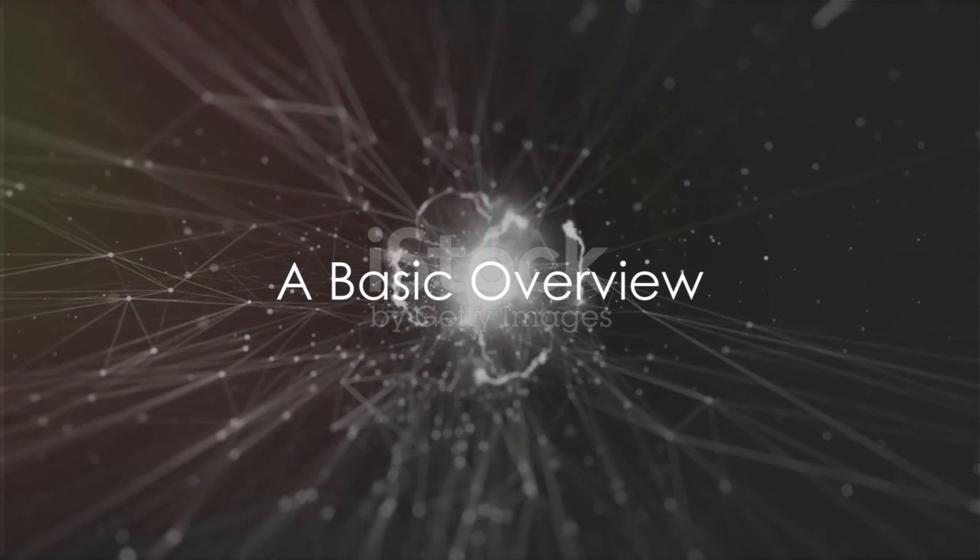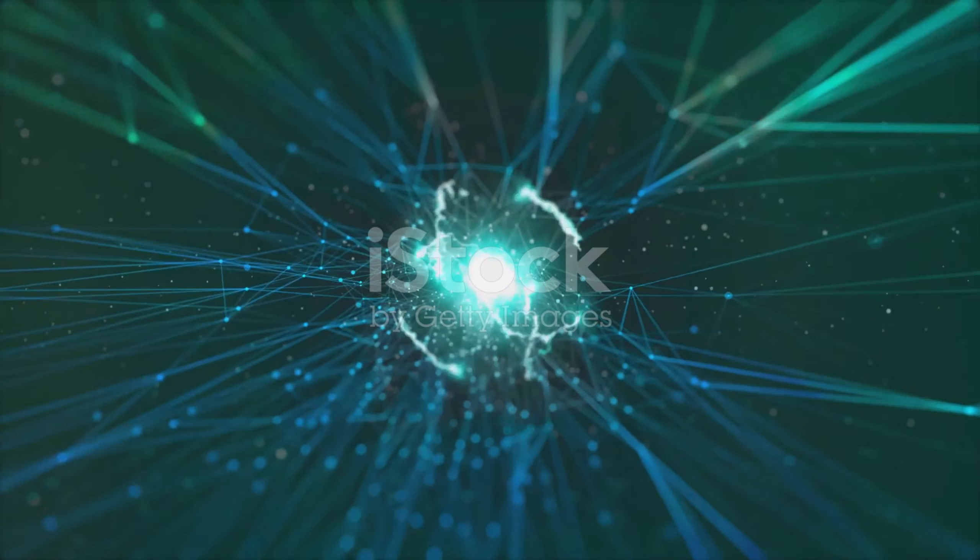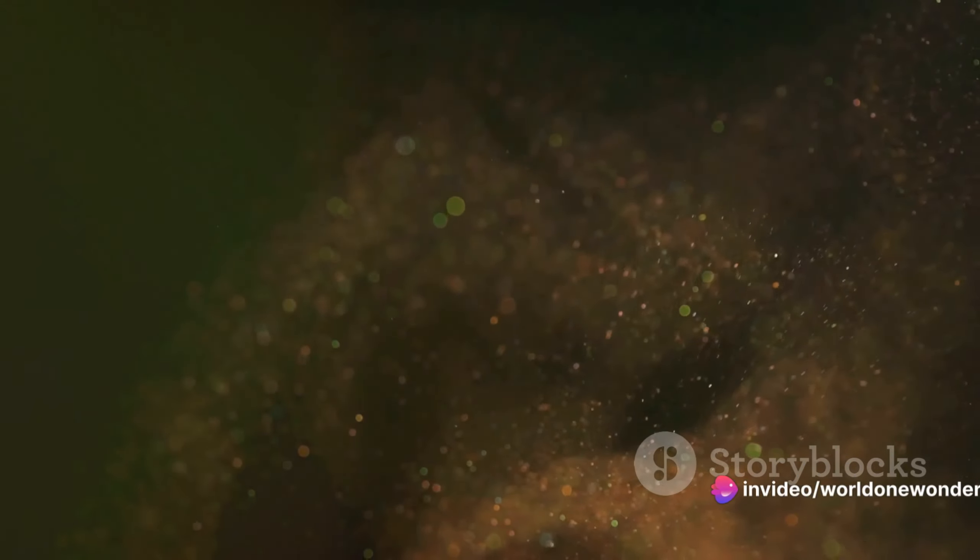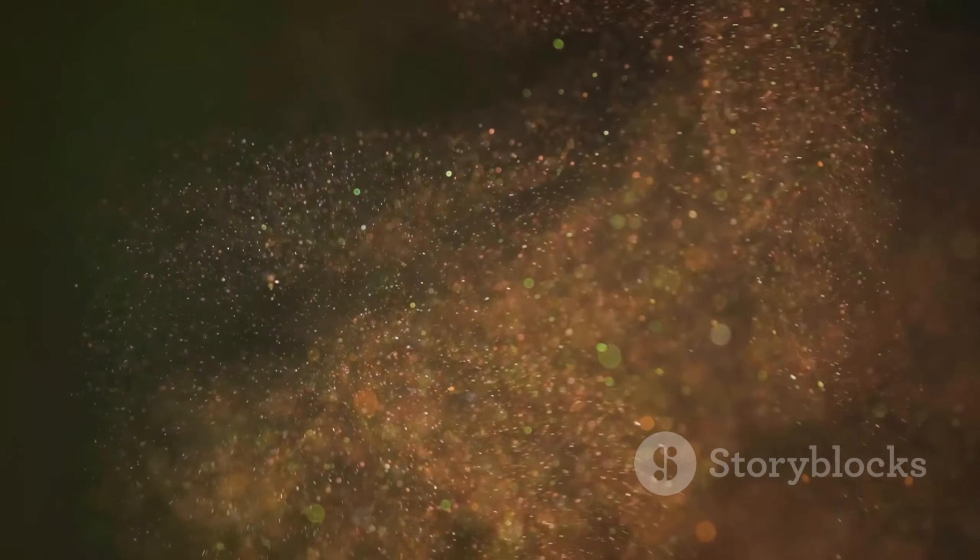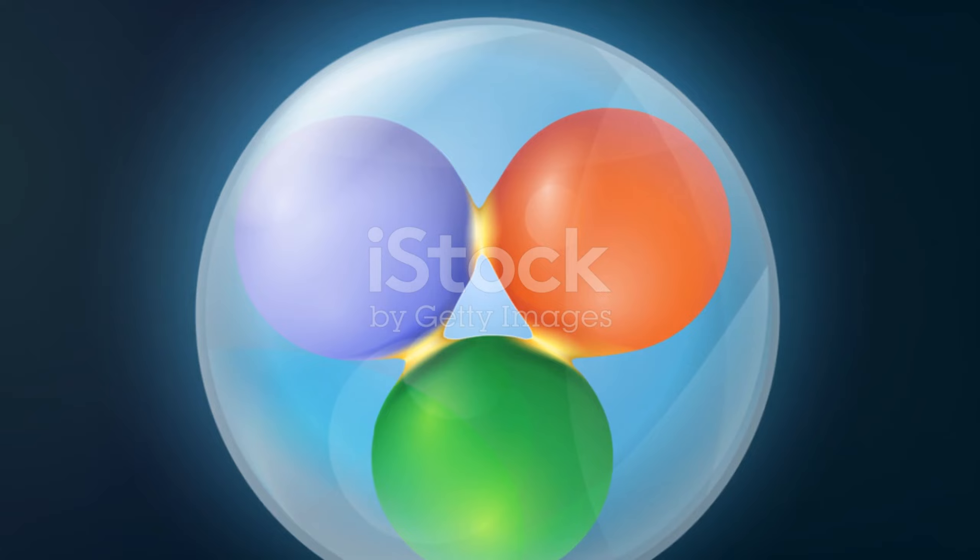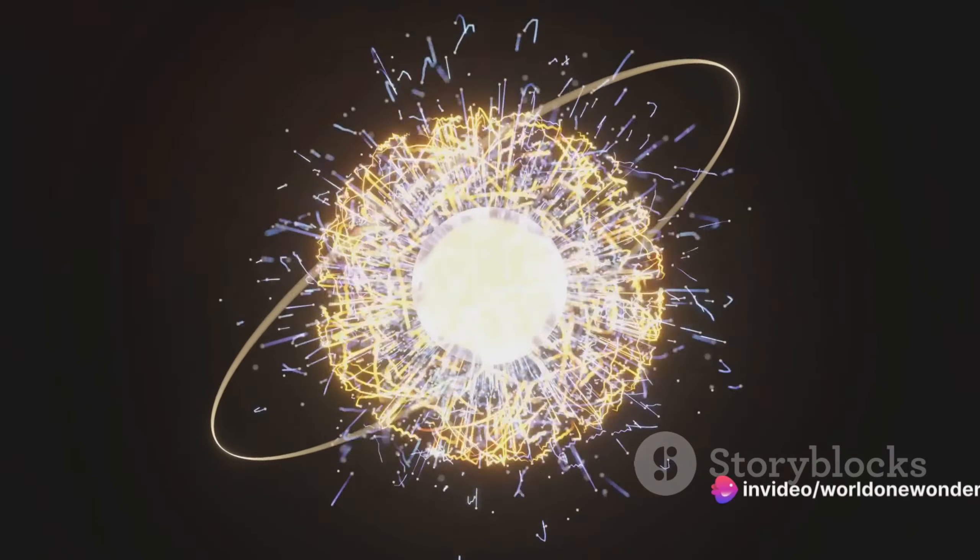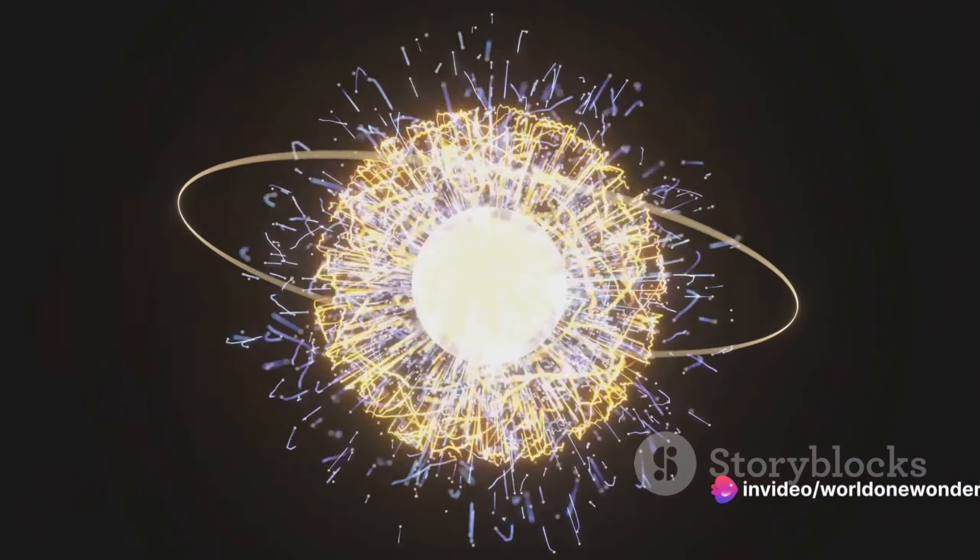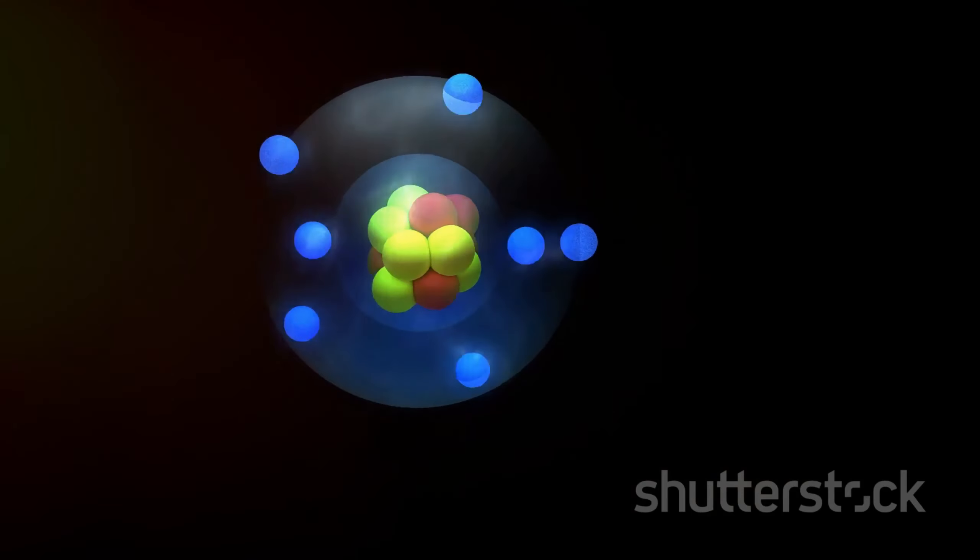Imagine a particle so tiny and elusive that it can pass through entire planets without a hitch. Welcome to the mesmerizing world of neutrinos. These subatomic particles are an enigma wrapped in a mystery baffling scientists with their puzzling properties for decades. Let's take a dive into the basics of neutrinos. Neutrinos, first postulated in the mid-20th century by Wolfgang Pauli, are one of the fundamental particles that make up our universe. They belong to a family of particles known as leptons, which also includes electrons.